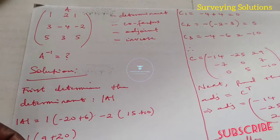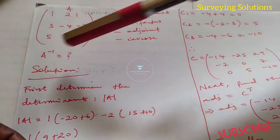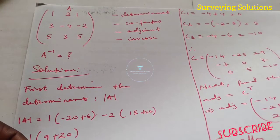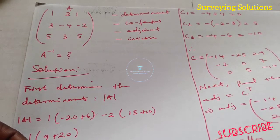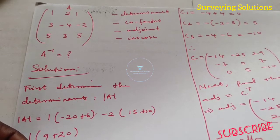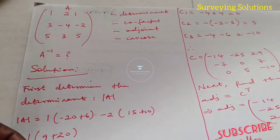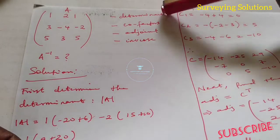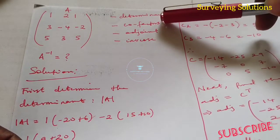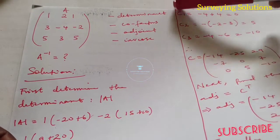We are working with a three by three matrix, which is matrix A, and we want to determine its inverse. We are taking it in different stages — we'll use the manual method, then show you how to get the same results using your calculator and also using Microsoft Excel. The first thing is you find the determinant, then the cofactors, then the adjoint, and finally the inverse.